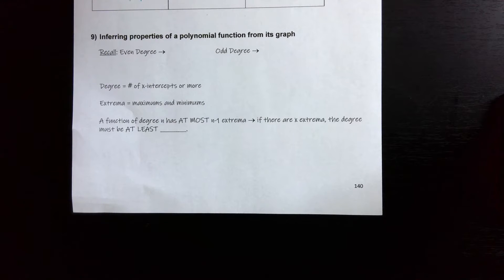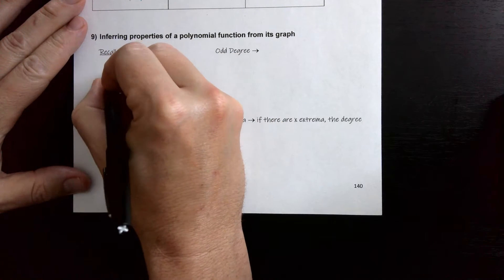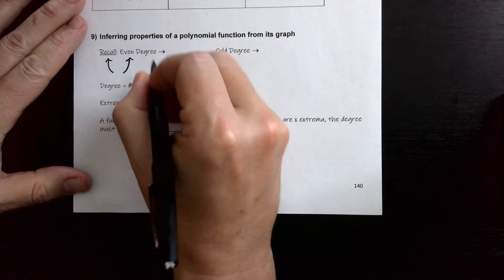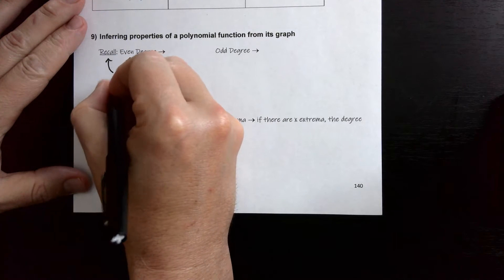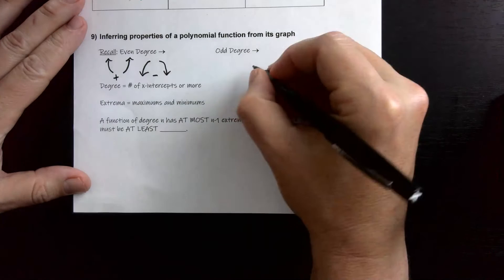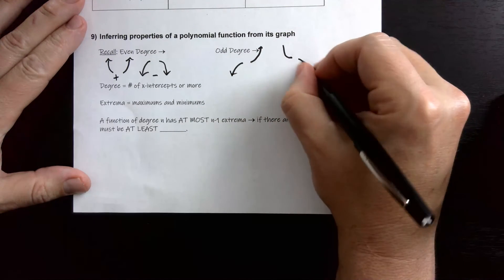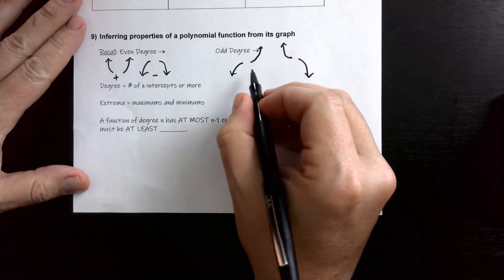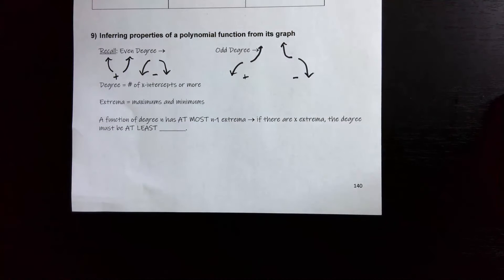In this video we're going to talk about inferring properties of a polynomial function from its graph. Recalling from earlier videos: an even-degree function has end behavior that either goes up on both sides (positive leading coefficient) or down on both sides (negative leading coefficient). An odd-degree function goes up on the right and down on the left, or down on the right and up on the left, depending on the sign of the leading coefficient.